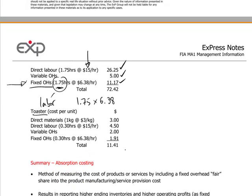For the toaster, a similar approach applies. We have direct materials, direct labor, and variable overheads. For fixed overheads, we apply the fixed overhead absorption rate on a direct labor basis. Producing one toaster requires 20 minutes of work — that's 0.33 hours. At the company-wide overhead absorption rate of $6.38, one unit of toaster absorbs $1.91 of fixed overheads according to the cost card.